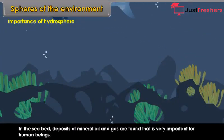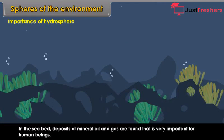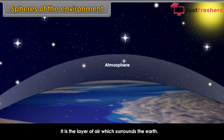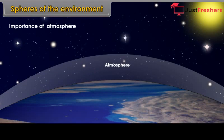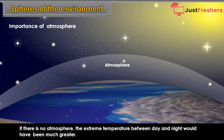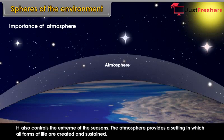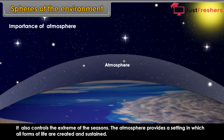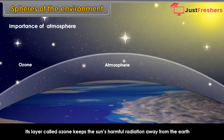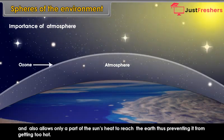Atmosphere: It is the layer of air which surrounds the earth. Importance: Without atmosphere, the extreme temperature between day and night would have been much greater. It also controls the extremes of the seasons. The atmosphere provides a setting in which all forms of life are created and sustained. Its layer called ozone keeps the sun's harmful radiation away from the earth and allows only a part of the sun's heat to reach the earth, thus preventing it from getting too hot.